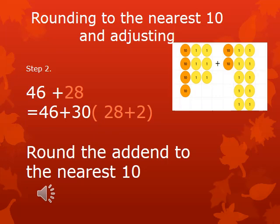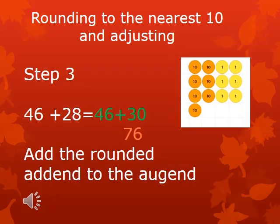This is then easier to solve. Now add the rounded number to the addend. Thus 46 plus 30 is equal to 76.